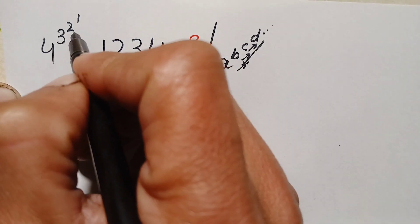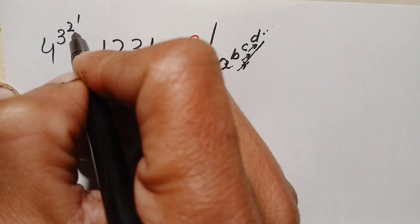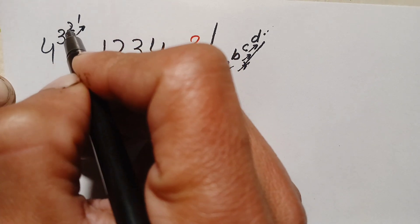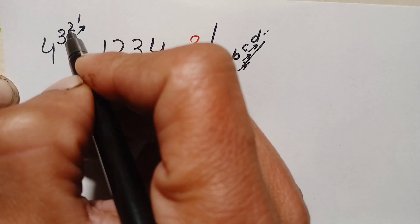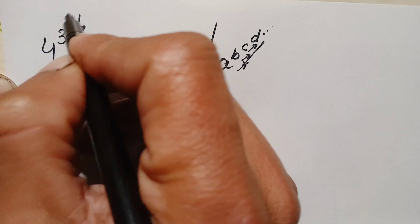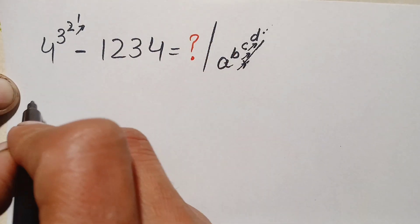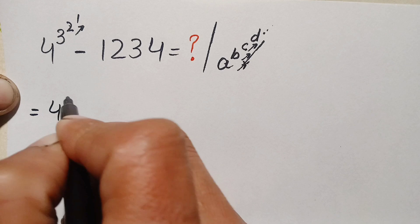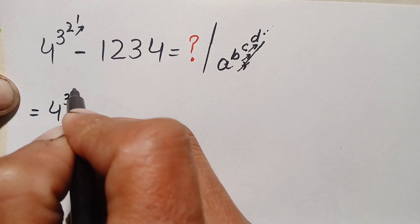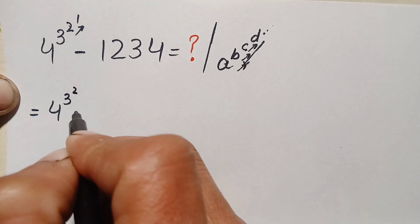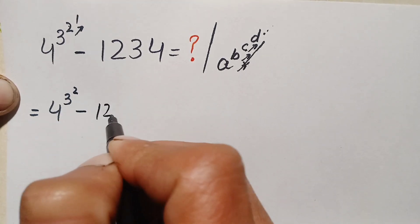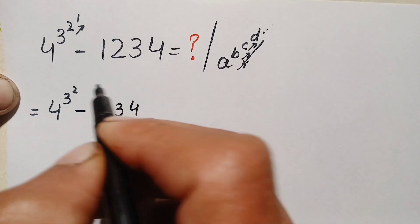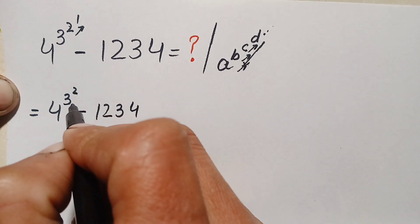So first we will solve c raised to power d, then b raised to power that result, then a raised to power that number, working downward. Using this same method here, we first solve 2 raised to power 1. Now 2 raised to power 1 is simply 2, so we replace that power with 2. This number becomes 4 raised to power 3 raised to power 2, minus 1234.